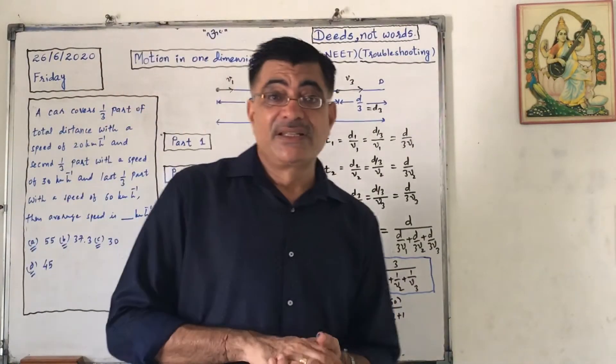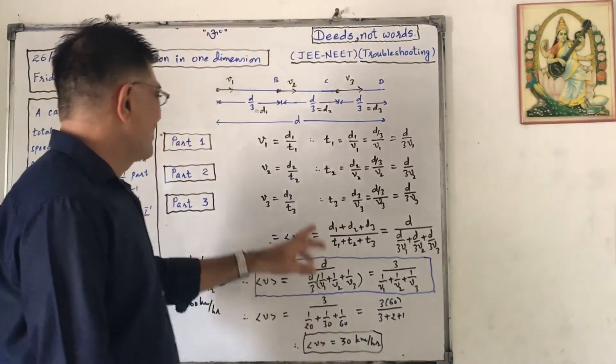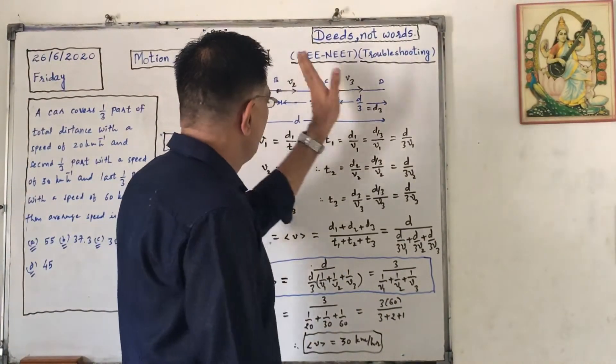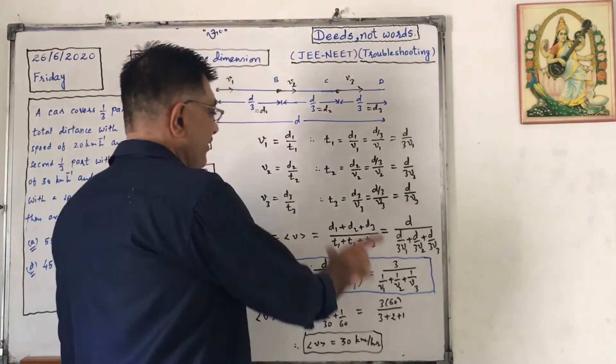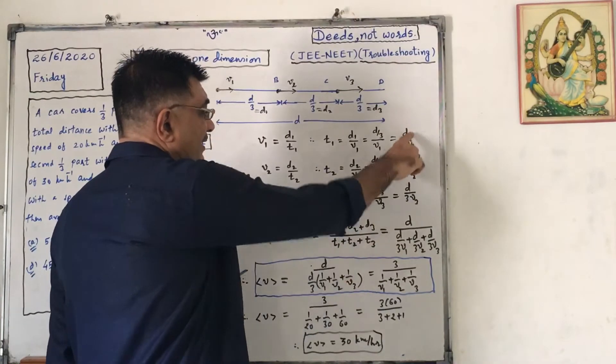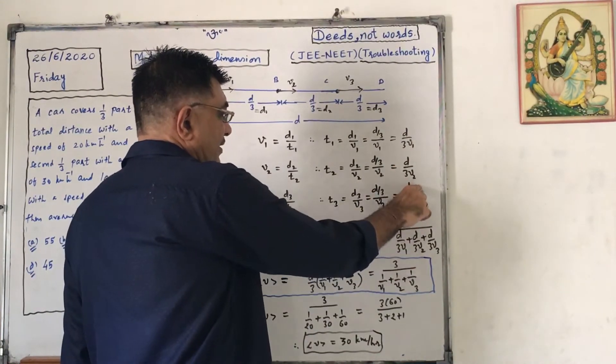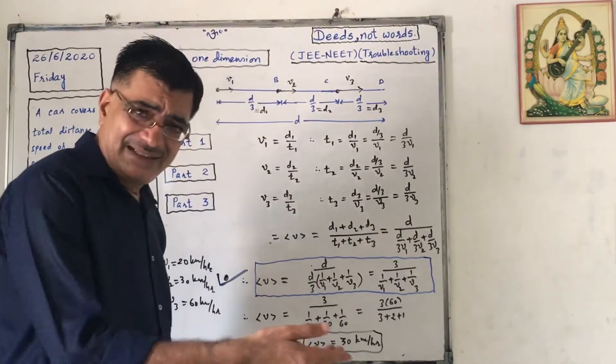Now, average speed means total distance traveled by total time taken. So it is total distance traveled is D1 plus D2 plus D3, total time taken is T1 plus T2 plus T3. But we know that D1 plus D2 plus D3 is D, and T1 is D by 3V1, T2 is D by 3V2, T3 is D by 3V3.